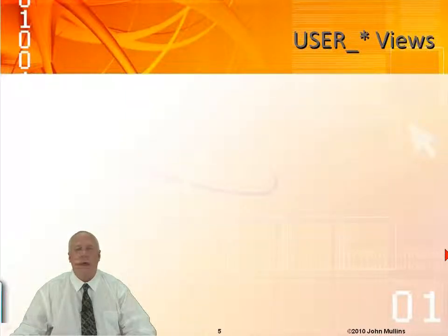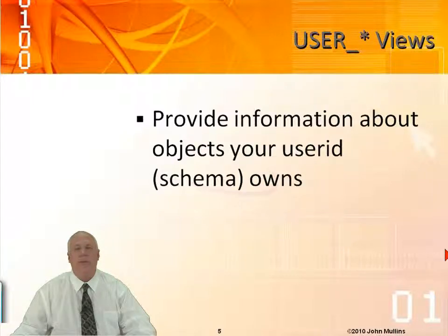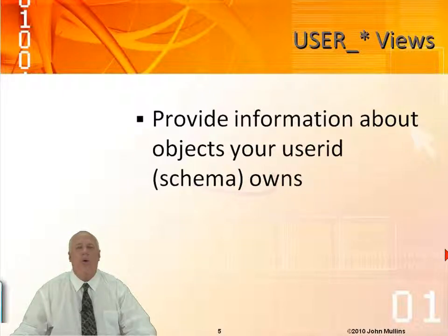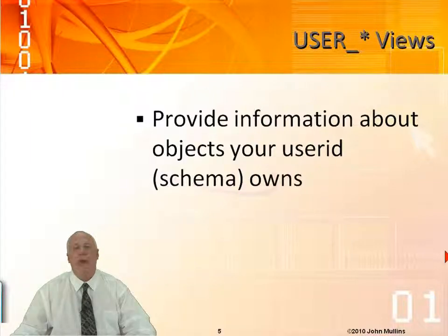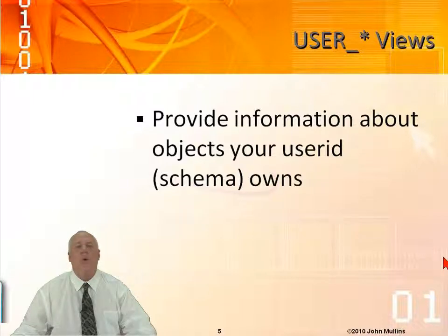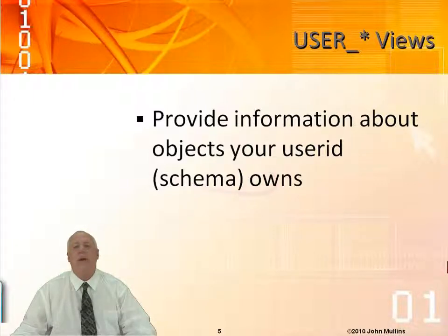Let's start with the user_ views — the asterisk just means any name could follow. So examples would be user_tables or user_indexes. Anything that starts with user_ is going to give you information about an object type that you own — whoever you're logged in as in Oracle. You'll hear the keyword schema a lot. Schema refers to an Oracle user ID and what objects that user ID actually owns.